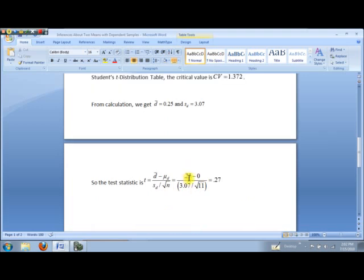And then in the denominator, notice here, you'll have to put both the numerator and denominator of the denominator here inside parentheses to make sure everything's well posed. So we get 3.07 divided by the square root of 11, so 0.27 is our test statistic.